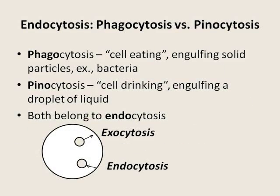There are two kinds of endocytosis: phagocytosis and pinocytosis. Phagocytosis is also known as cell eating — the cells engulf solid particles like bacteria that must be killed. Pinocytosis is known as cell drinking; in this case, the cell engulfs a droplet of liquid. On the picture, the big circle is the cell and the small circles inside it are the vesicles — one is moving toward the cell membrane for exocytosis and another moves away from the membrane after endocytosis.